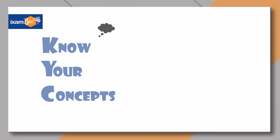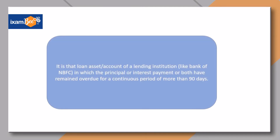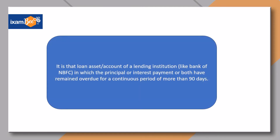NPA is that loan or asset of a lending institution like a bank or NBFC in which the principal or the interest payment, or both, have remained overdue for a continuous period of more than 90 days. Let us understand this.